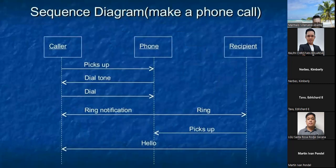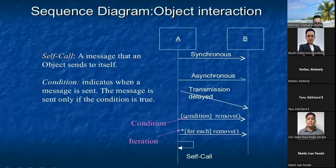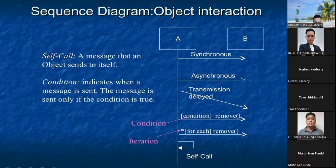In sequence diagrams — for example, making a phone call: the caller picks up the phone, the recipient dials, the ringtone rings, then the call is picked up, and the recipient responds. This is a sample of the sequence diagram. Sequence diagrams show object interaction. A self-call is a message that an object sends to itself.